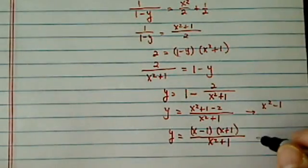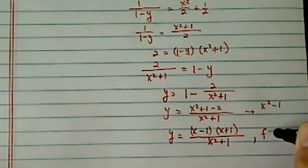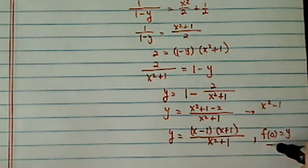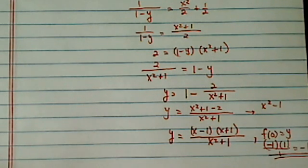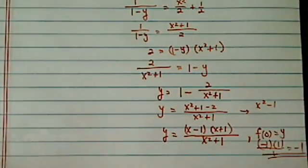Okay, let's check. So f of 0, which is equal to y, let's see. 0, so I'm going to have minus 1 times 1, and divided by 1, it does equal to minus 1. So this part satisfies,